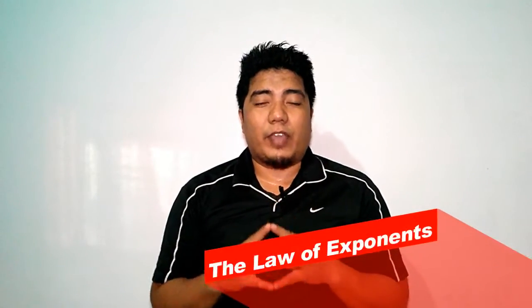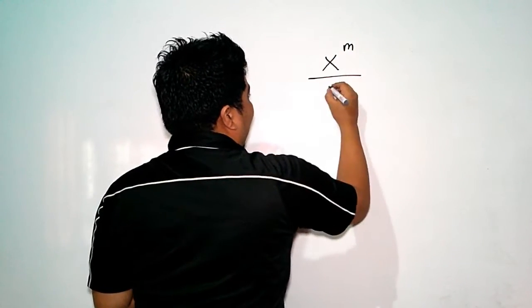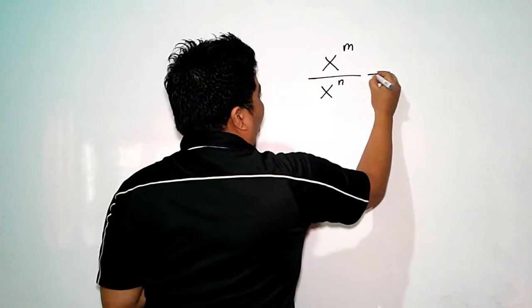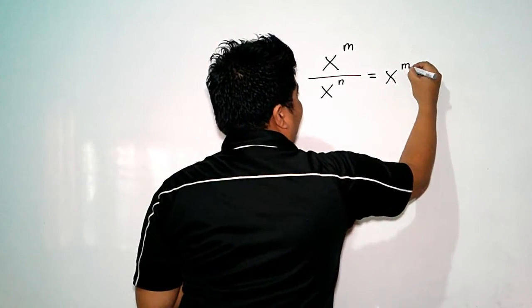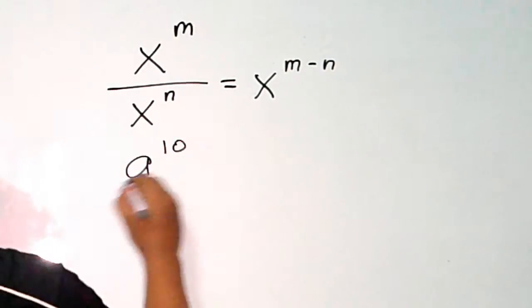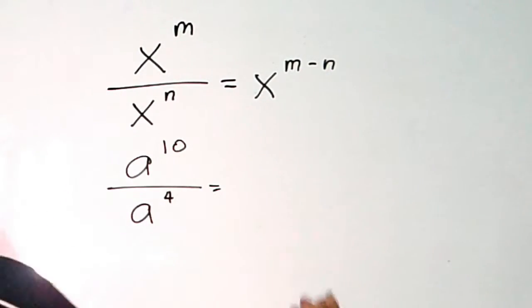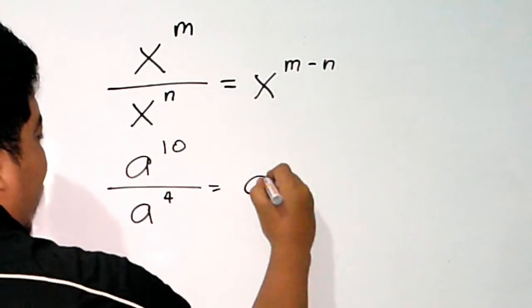The technique here is very simple. First, you need to understand the law of exponents, specifically the quotient rule. According to the quotient rule, if you have x to the power of m divided by x to the power of n, you subtract the exponents. Therefore, if you have a to the power of 10 divided by a to the power of 4, you get a to the power of 6.